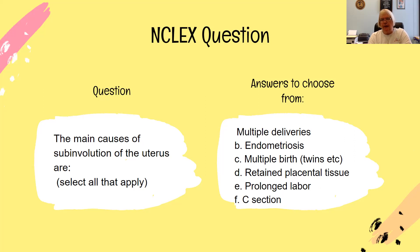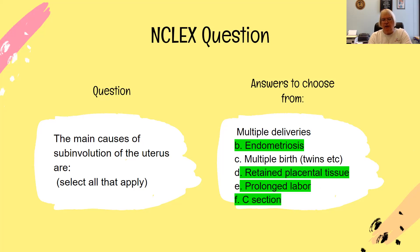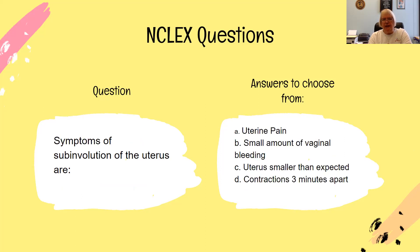The correct answers are endometritis, retained placental tissue, prolonged labor, and a C-section. The next NCLEX question is: symptoms of subinvolution of the uterus are...